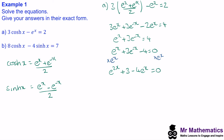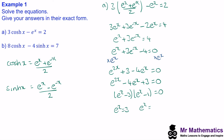We might recognise this as a quadratic, where we have a power of 2, a power of 1, and a constant term. Rewriting with descending powers, we can factorise this as e to the x minus 3, multiplied by e to the x minus 1, equals 0. So the two solutions are e to the x equals 3 and e to the x equals 1. Taking the natural log of both sides, our solutions are x equals the natural log of 3, and x equals the natural log of 1, which is 0.